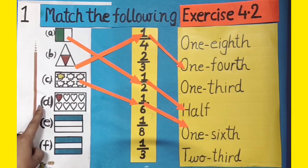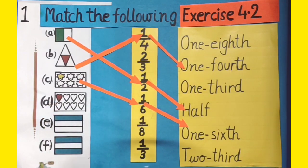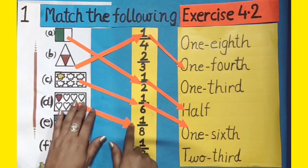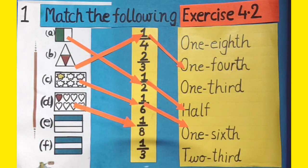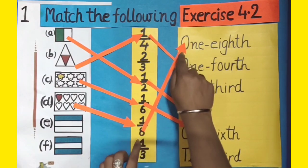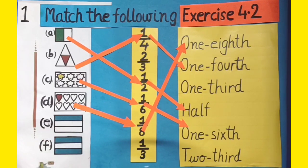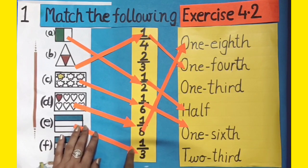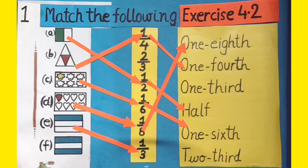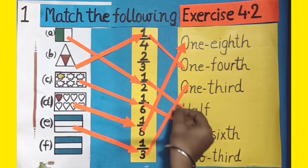In part D, out of 8 equal parts, one is colourful. So its fraction form will be 1 by 8, and in words it can be written as 1 eighth. Let's match these two. Now in part E, out of 3 equal parts, one is colourful. So its fraction form is 1 by 3, and in words it can be written as 1 third. Let's match these two.